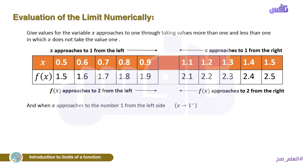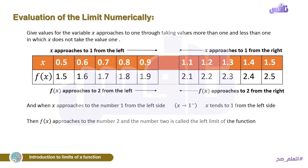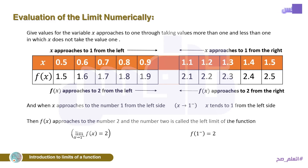Everything is approaching the same value. From the other side, when x approaches 1 from the left side, f(x) also approaches the number 2. The number 2 is called the left limit of the function. We write: the limit of f(x) as x tends to 1 from the negative side equals 2.